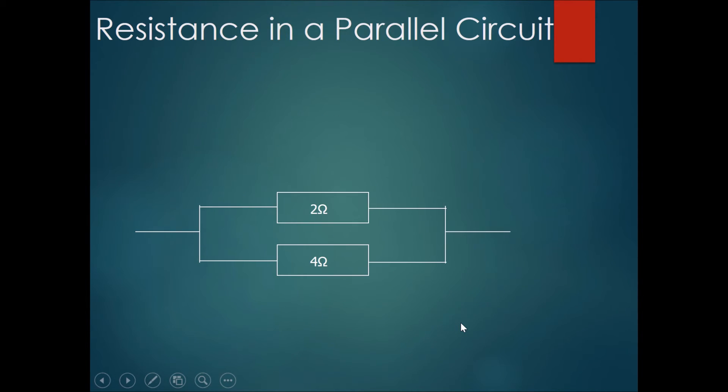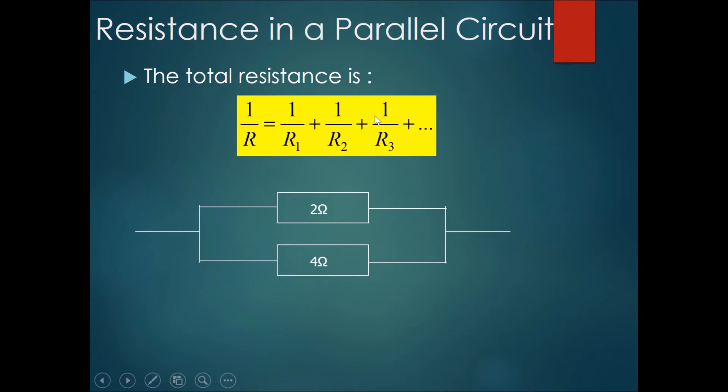Now let's take a look at resistance in a parallel circuit. Total resistance in a parallel circuit is 1 over R total resistance equals 1 over R1 plus 1 over R2 plus 1 over R3, and so on.